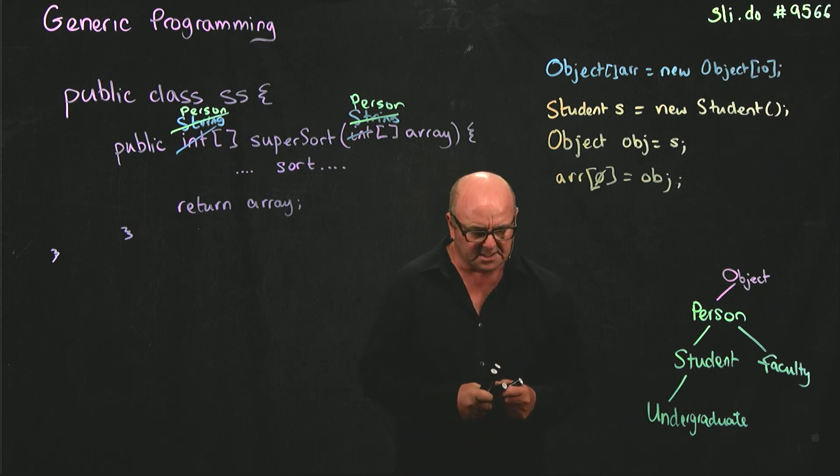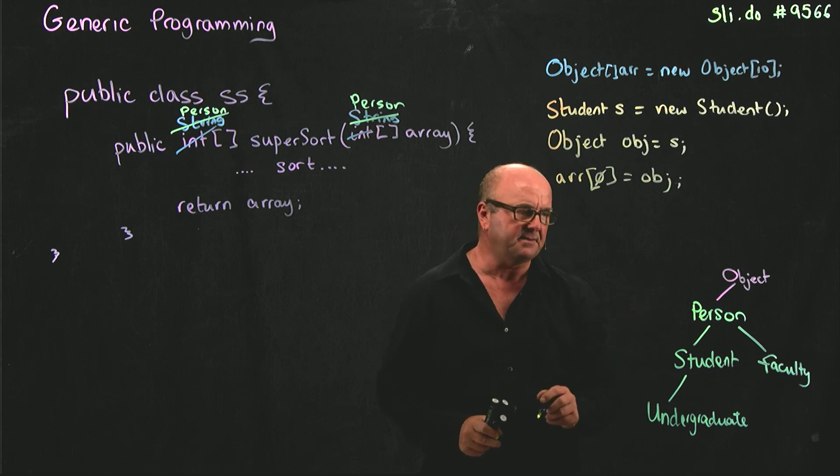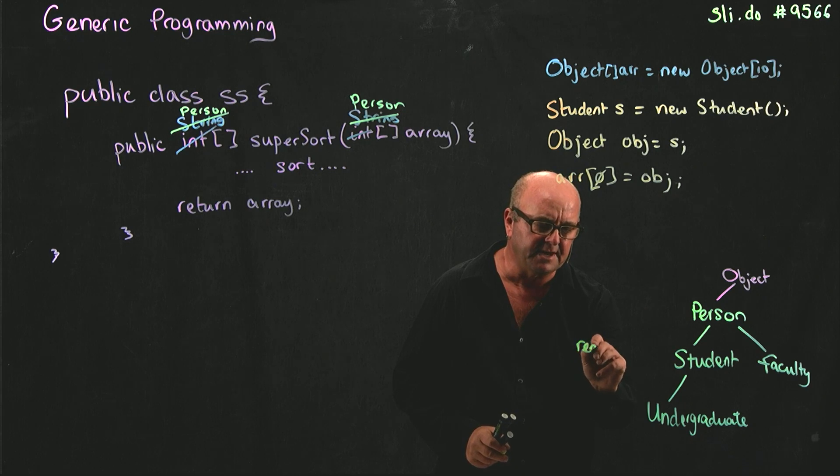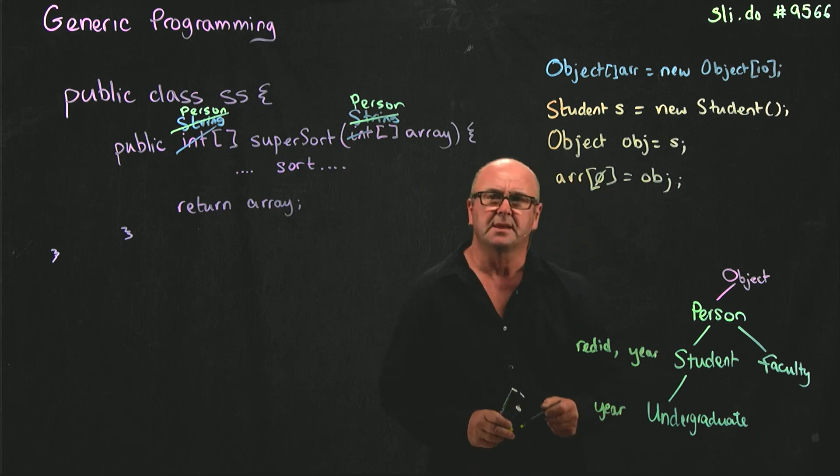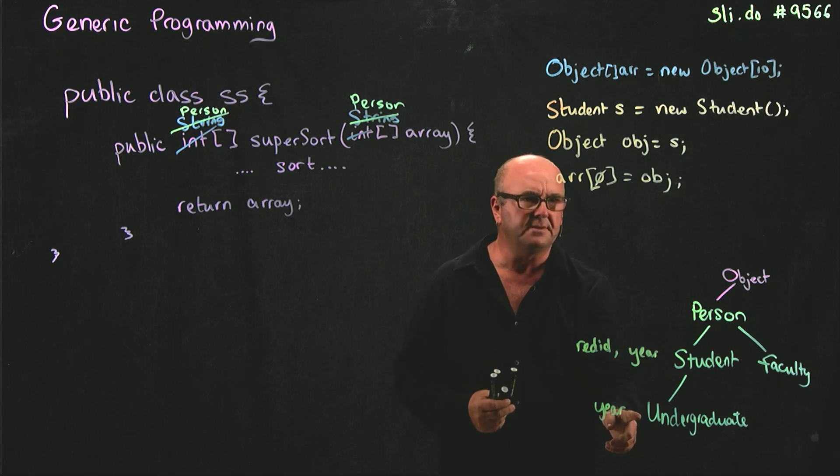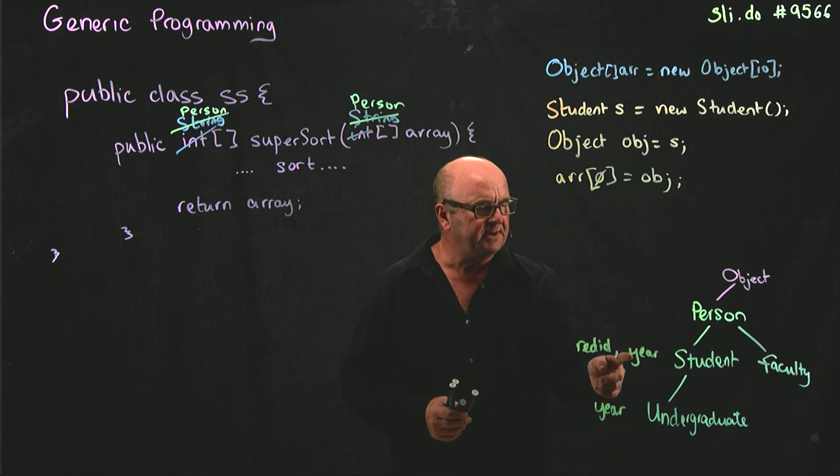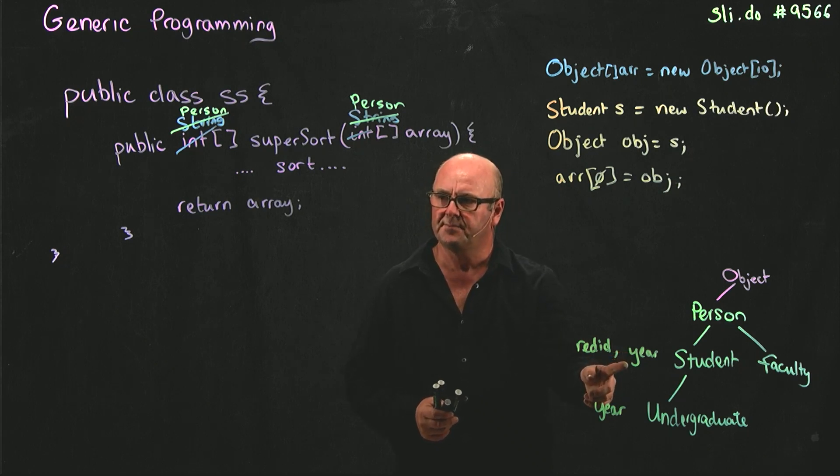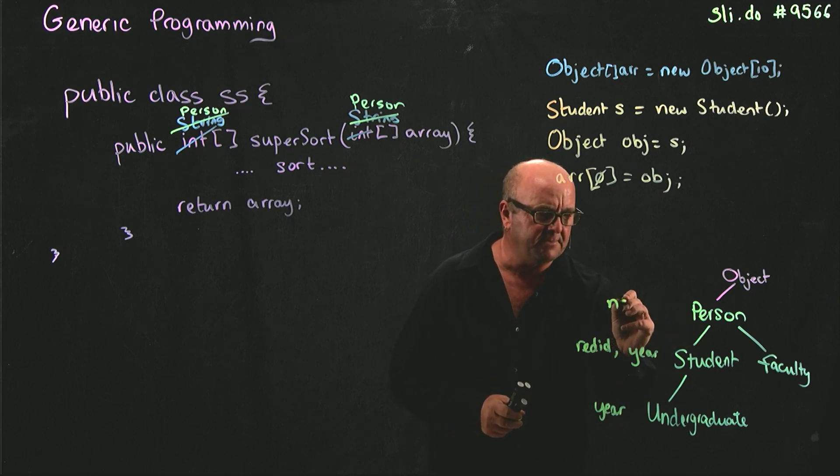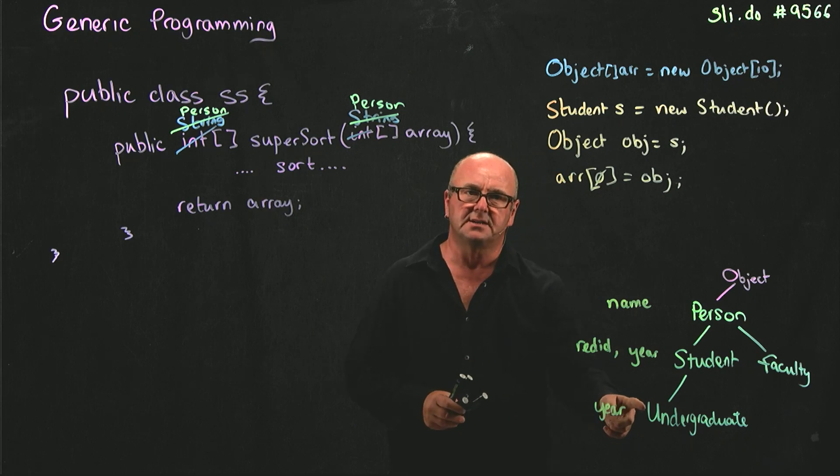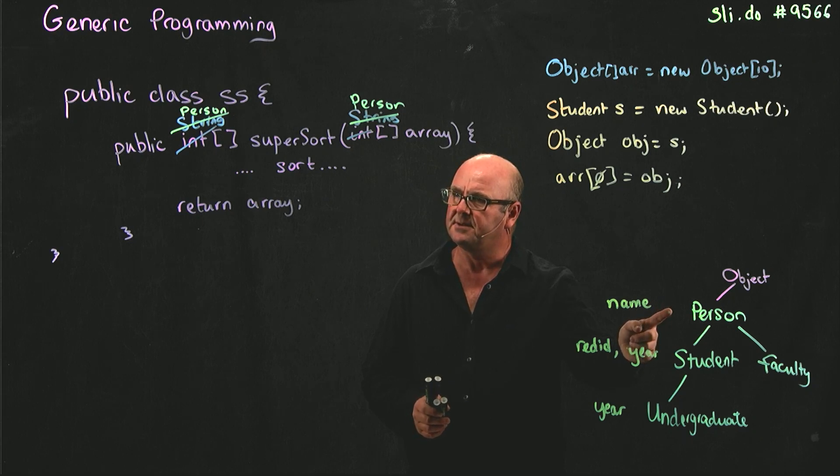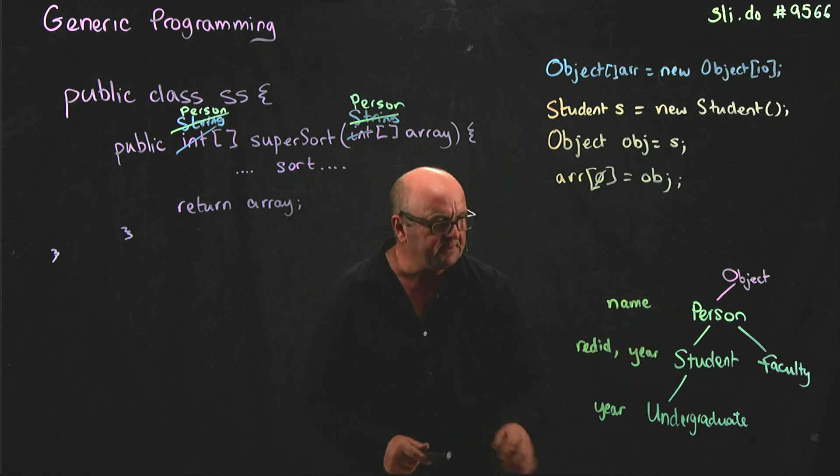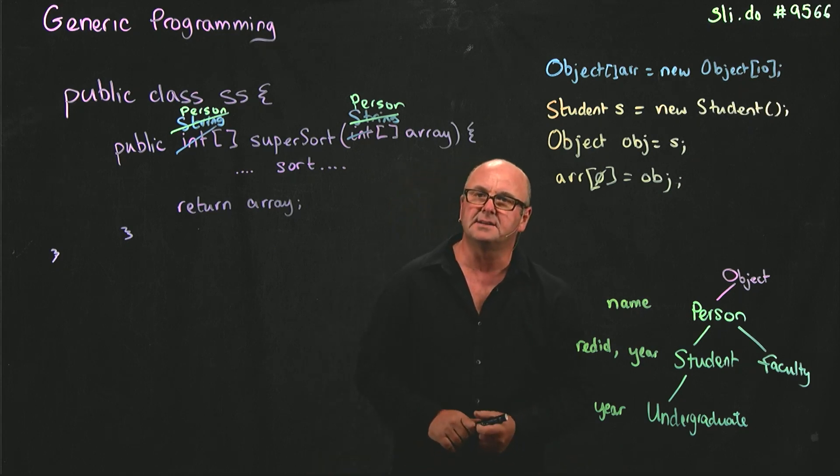I'm going to take a little aside here and remind you about some of the inheritance that we talked about the other day. So we talked about methods that each of these could have. So a student, for example, might have a red ID method and a year method, and an undergraduate might have a year method. And if we define an undergraduate variable that's a member of the undergraduate class, its year method overrides the student's year method. Similarly, our person object might have a name, and our undergraduate object would override its name. Or, if undergraduate does not include a name method, it would just use the person's name method.